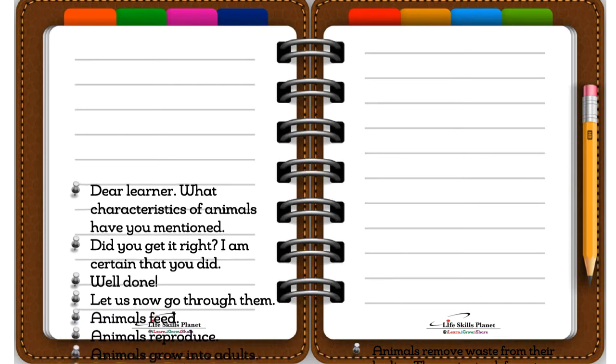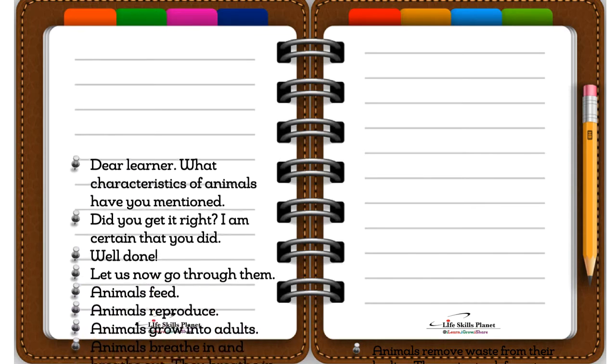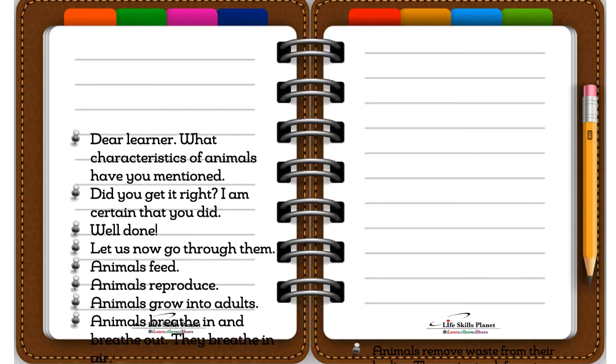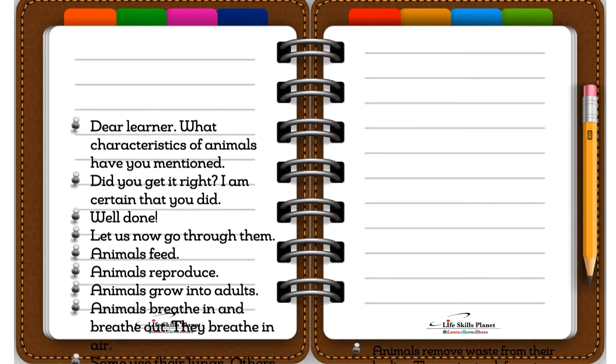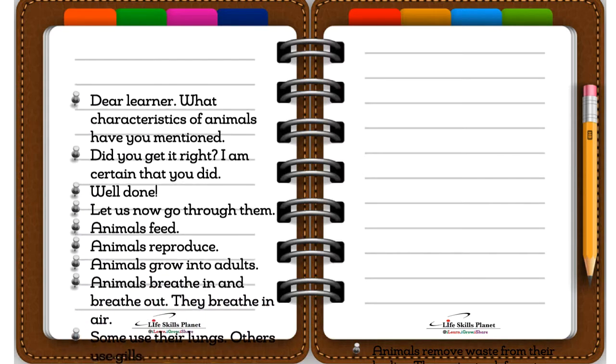Animals feed. Animals reproduce. Animals grow into adults. Animals breathe in and breathe out — they breathe in air.